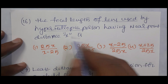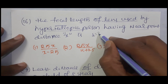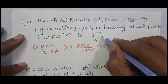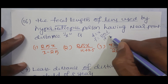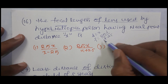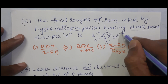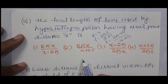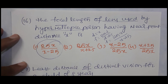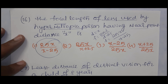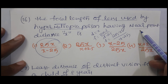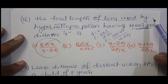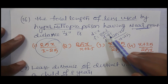Question 16: Focal length of the lens used by a hypermetropic person with near point distance x. We know the focal length formula in this case is f = 25d / (d − 25), where d is the near point distance. Here d = x, so focal length = 25x / (x − 25). Hypermetropia is also called long-sightedness or far-sightedness.